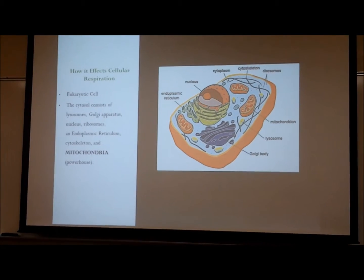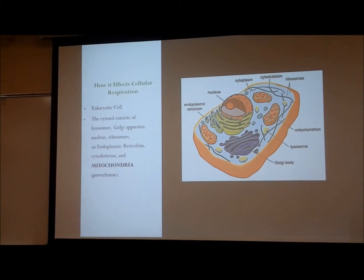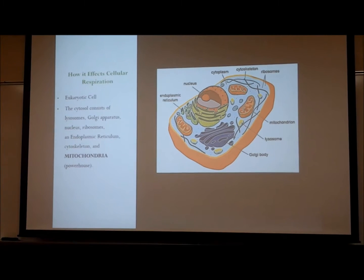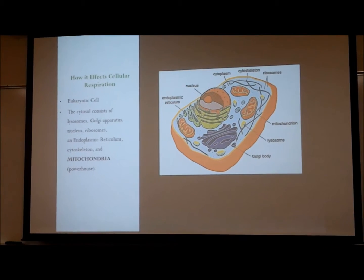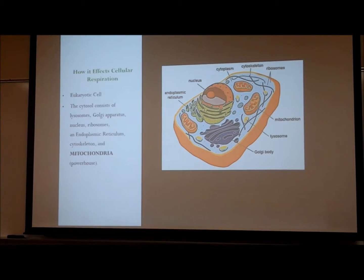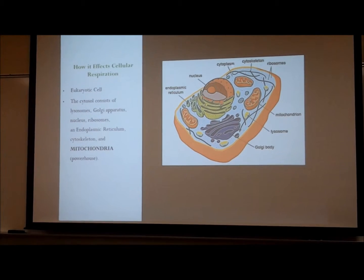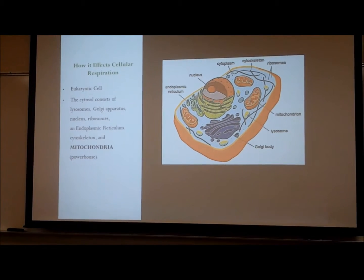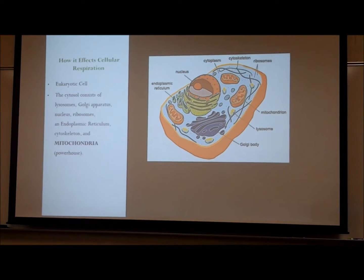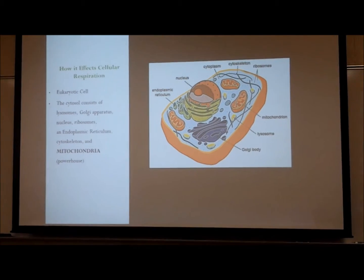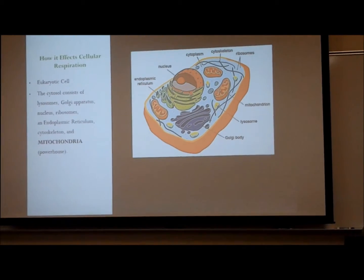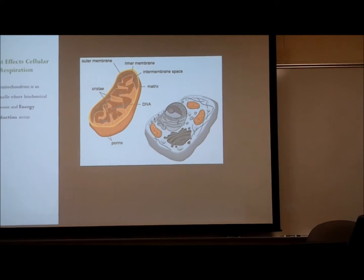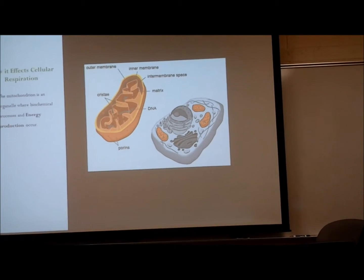When focusing on a eukaryotic cell shown in the figure to the right, we notice that it has various organelles consisting of the endoplasmic reticulum, nucleus, cytoplasm, cytoskeleton, ribosomes, Golgi body, lysosomes, and mitochondria. The mitochondria is an organelle found in large numbers in most eukaryotic cells. It is used for energy production.